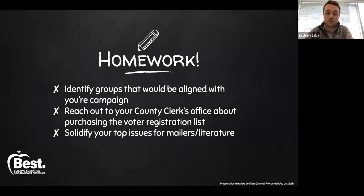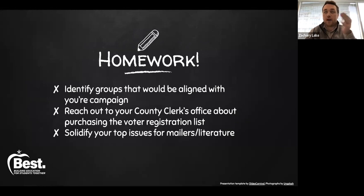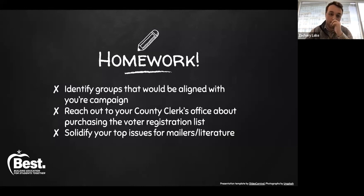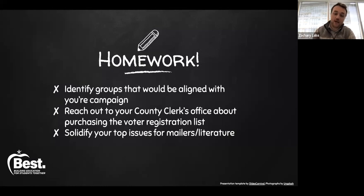Now you have some homework. First, if you haven't done so already, identify groups that would be aligned with your campaign. Second, reach out to your county clerk or county supervisor of elections to see about purchasing the public voter lists — some states require purchase, usually not an exorbitant fee, and some are available free if you are a candidate. Third, solidify your top issues. These are not only important for your stump speech — they will be the center of your mailers and your door-to-door literature.